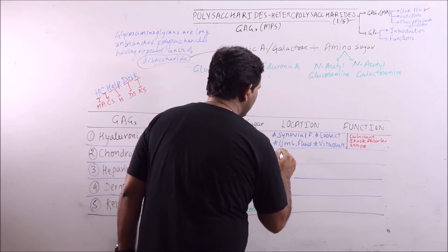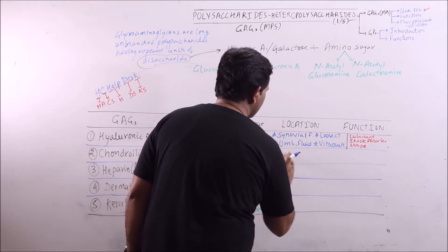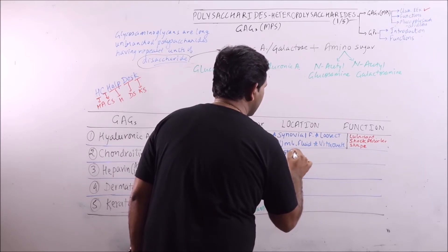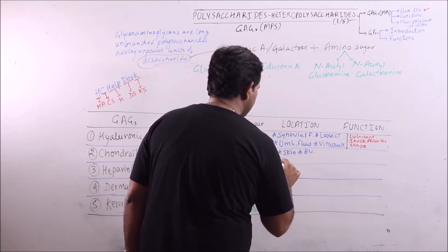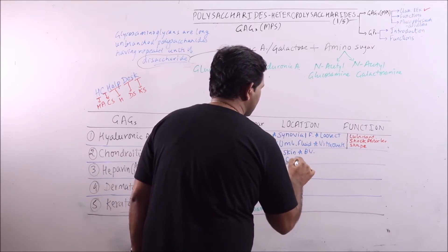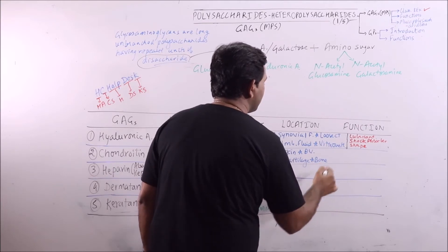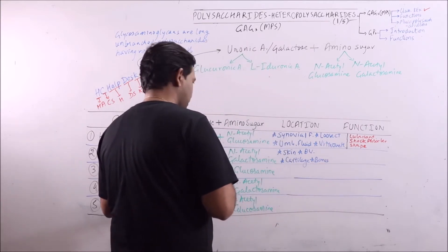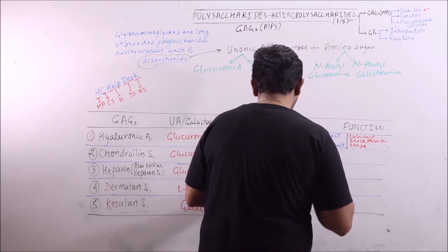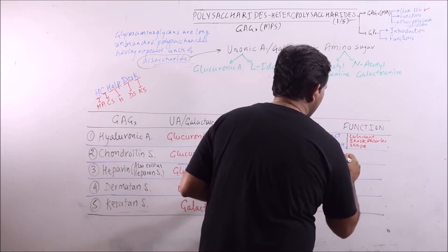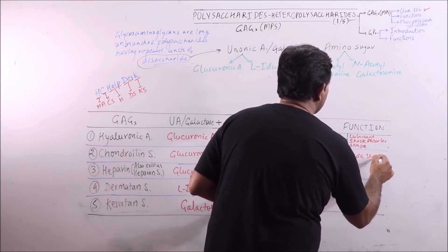Now chondroitin sulfate is found in skin, blood vessels, cartilage, and bones. Here it will provide shape.